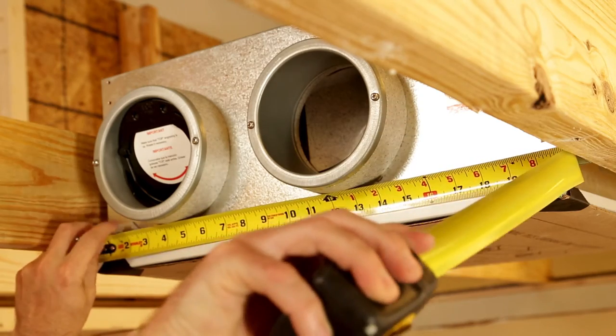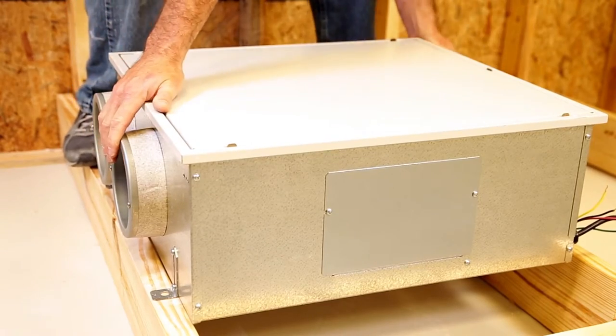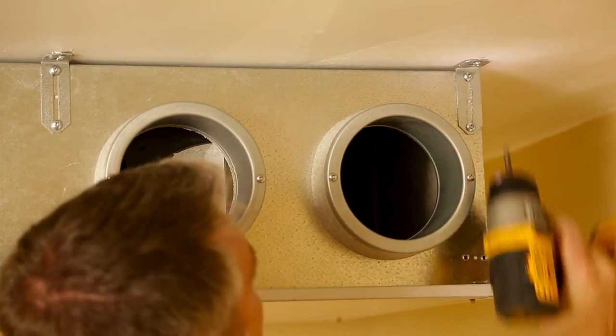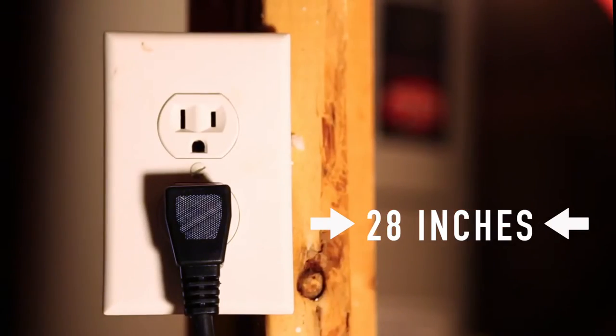The ERVS-100 can be mounted in the ceiling, in an attic, or in a small closet or mechanical room. Regardless of where the ERVS-100 is installed, there must be a standard three-prong electrical outlet within 28 inches of the unit that must be connected to its own dedicated circuit.